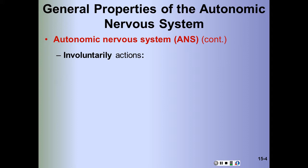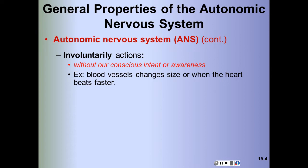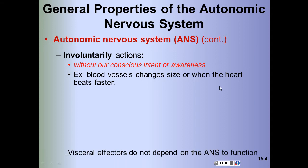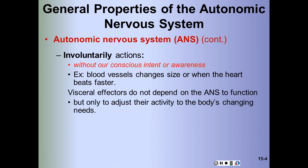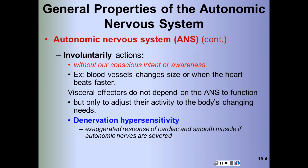The ANS usually carries out its actions involuntarily, without any conscious awareness. For example, blood vessel size changes via vasodilation and vasoconstriction, and heart rate increases are involuntary. The visceral effectors do not depend on the ANS to function, but only to adjust their activity to changing needs. If the ANS nerves to the cardiac or smooth muscles are severed, the muscle will exhibit exaggerated responses — this is called denervation hypersensitivity.